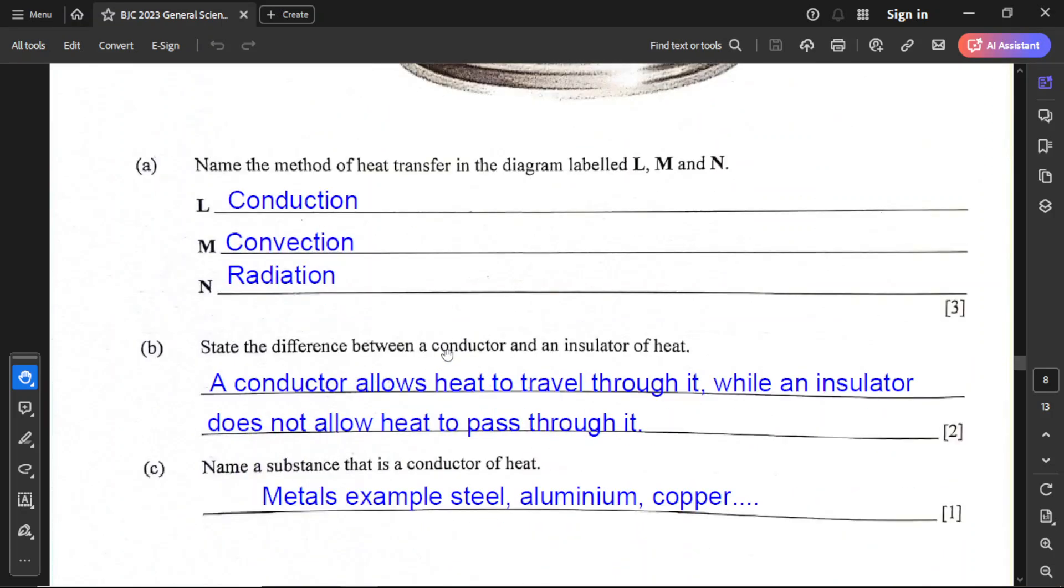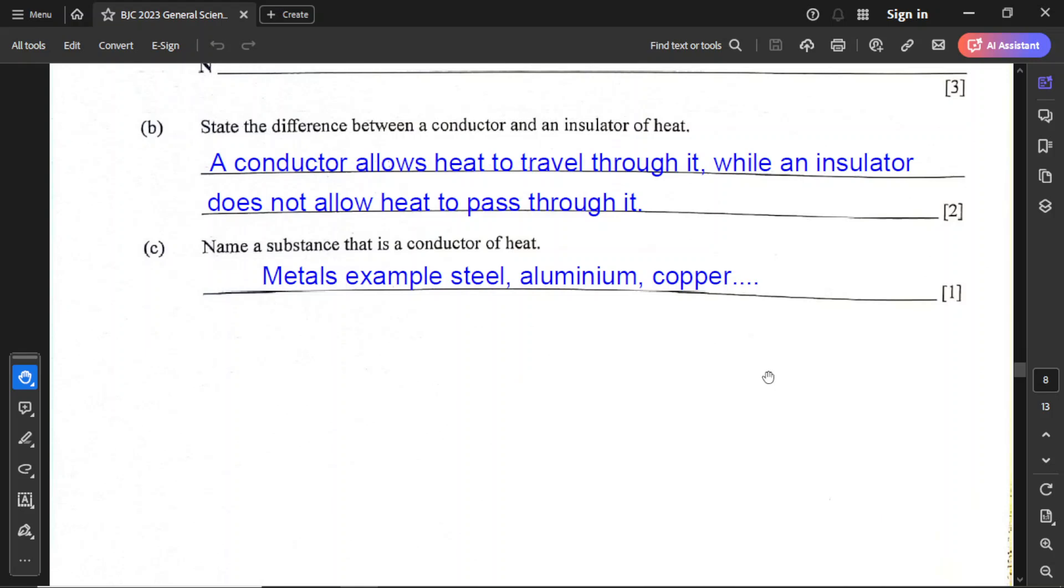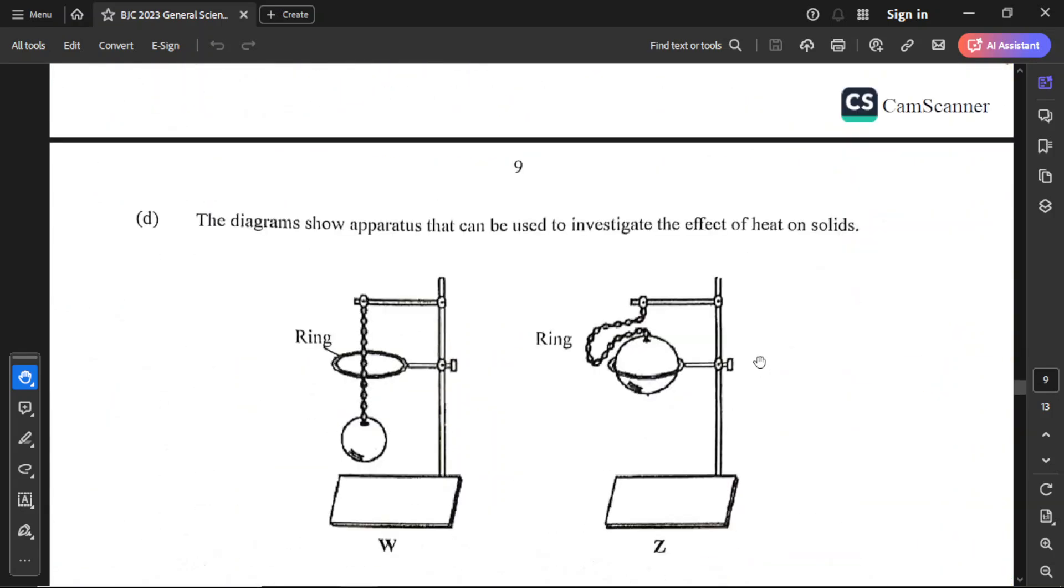For part B, state the difference between a conductor and an insulator of heat. A conductor allows heat to travel through it, while an insulator does not allow heat to pass through it. Name a substance that is a conductor of heat. You can name any metal. So we just say metals as a general name. Some examples would be like steel, aluminum, and copper.